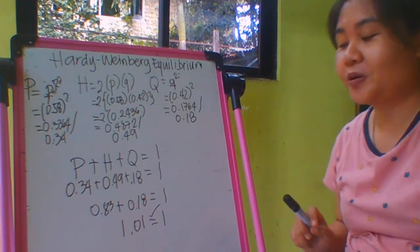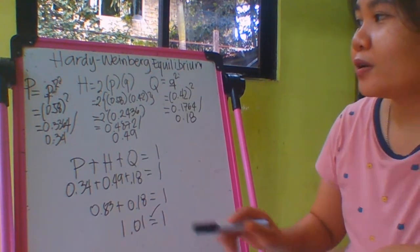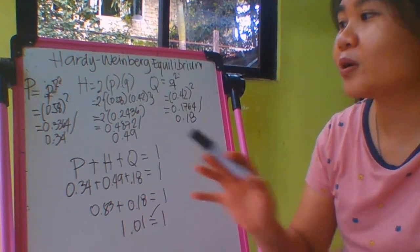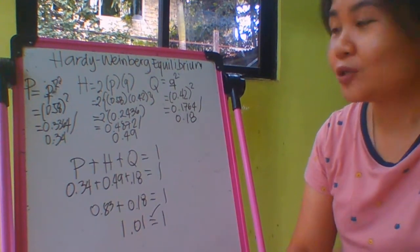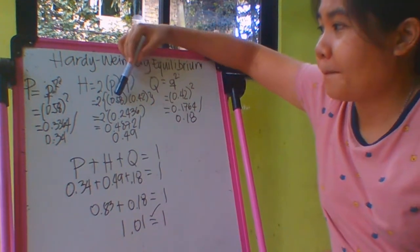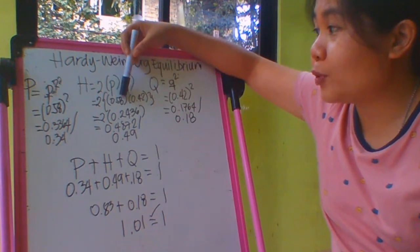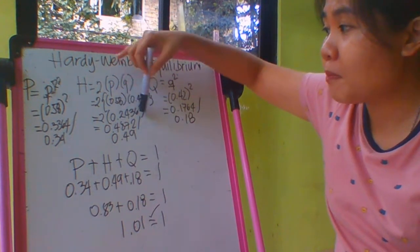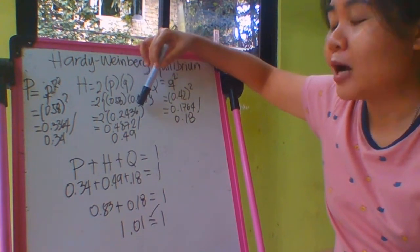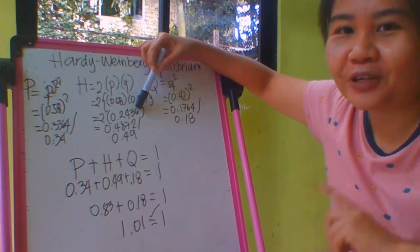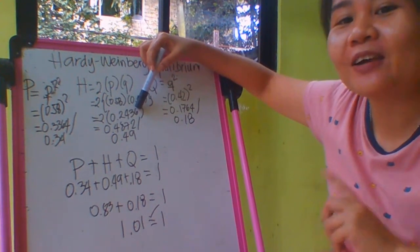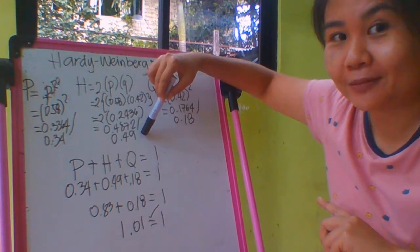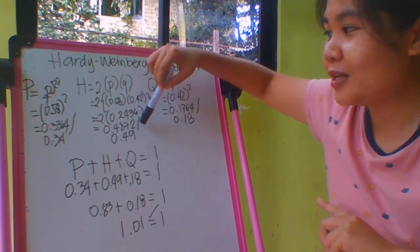So we only round off our answers once we arrive at the final answer. If you notice here, when I multiplied 0.58 with 0.42, I haven't even rounded it off yet. I only round it off here at 0.49 in the final answer.